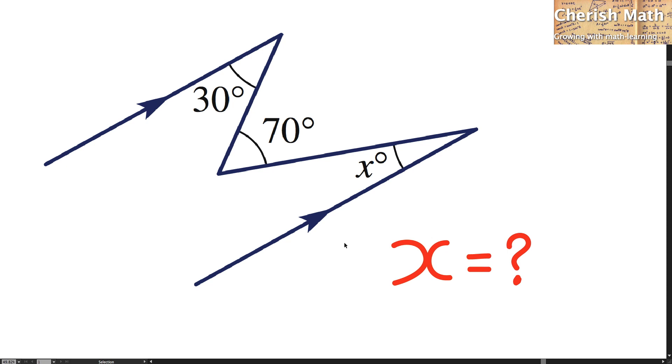This is the diagram that shows two parallel lines, and that's a V-shape connecting the two lines, given here 30 degrees, 70 degrees, and what is the value of the angle X?